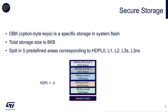Total storage is 8 KB, split into 5 predefined areas corresponding to HDP level 0, HDP level 1, HDP level 2, HDP level 3, and secure/non-secure. There is a combination between Temporal Isolation and secure storage: at HDP level 0 everything is accessible; at HDP level 1, OBK level 1 disappears; then level 2 and level 3 similarly.